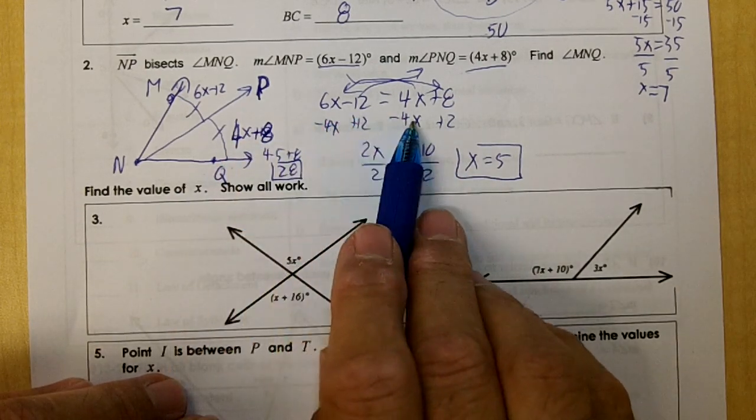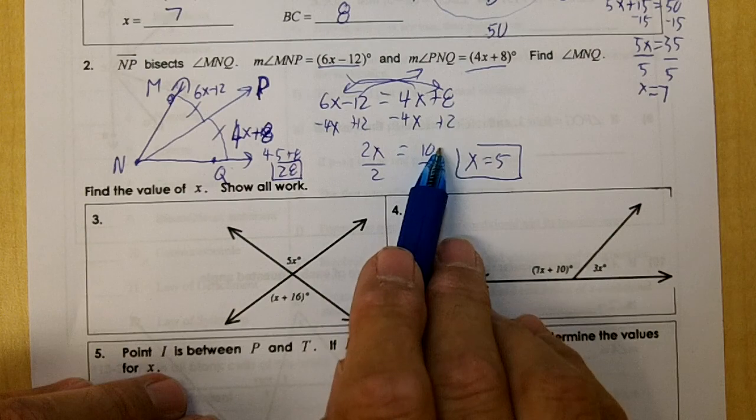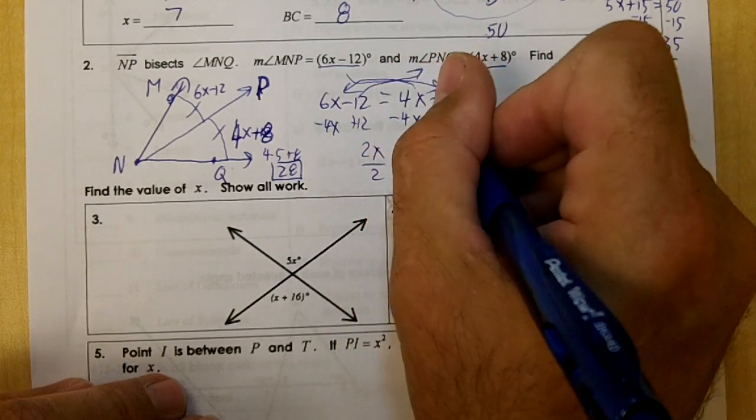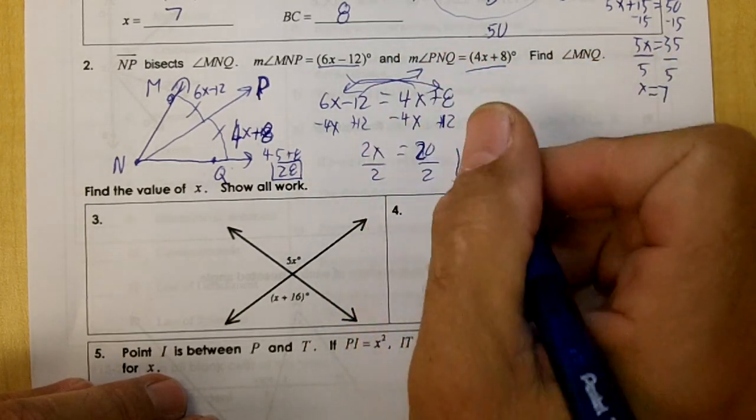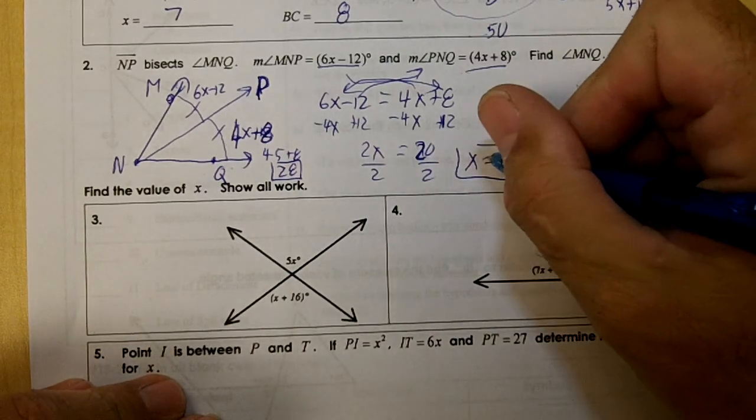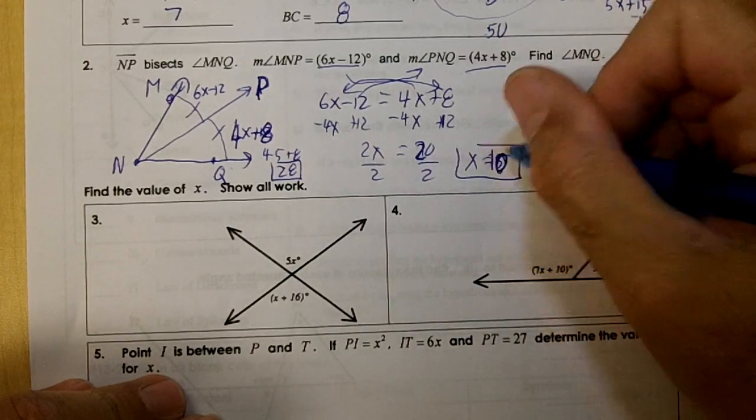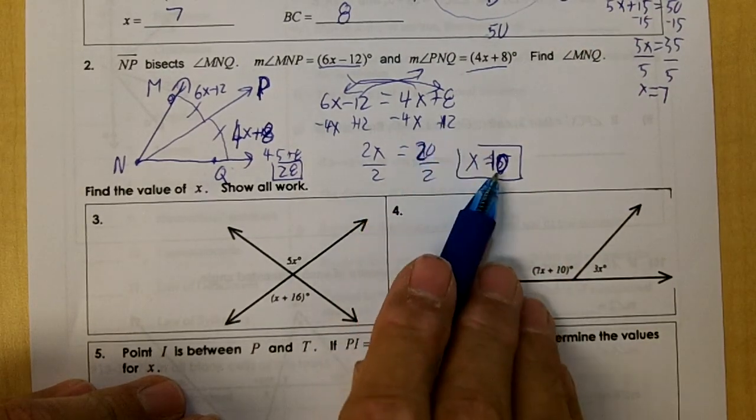4 times 5, 2X plus 12, this is 12 right here. So this is 20. I did that on purpose to see if you're paying attention. This will be 10. I forgot to add 12 there.